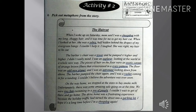Here comes the second activity — picking out metaphors from the story titled 'The Haircut'. 'When I woke up on Saturday, mom said I was a sheepdog with my long shaggy hair' — underline 'sheepdog', used for a person with an untidy look. 'She was a zebra, half hidden behind the drapes of my evergreen bangs' — underline 'zebra', because the front hair covered the forehead making her look like a zebra's stripes.